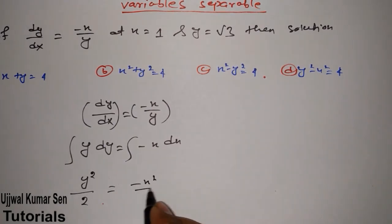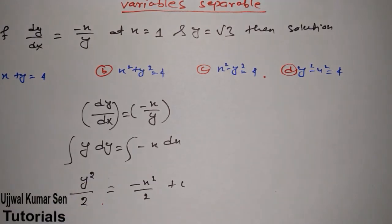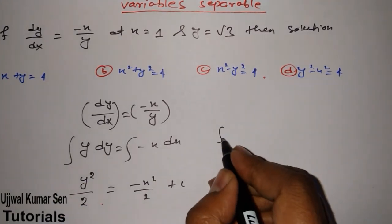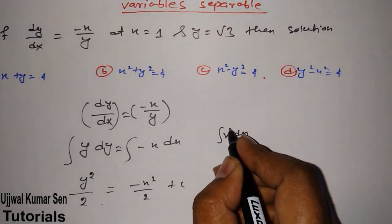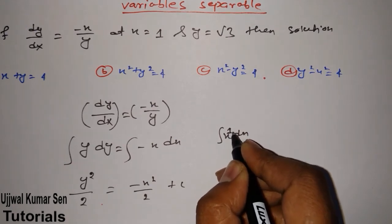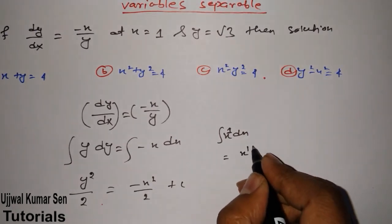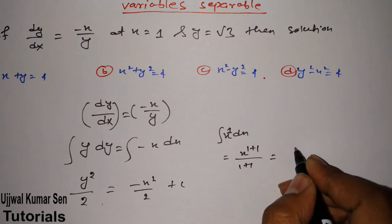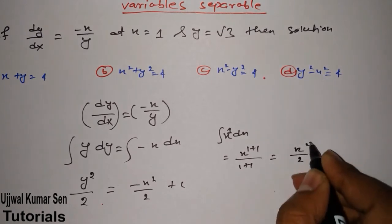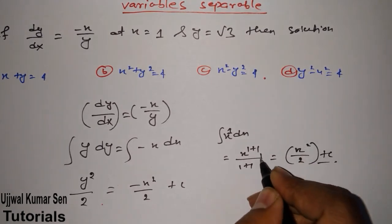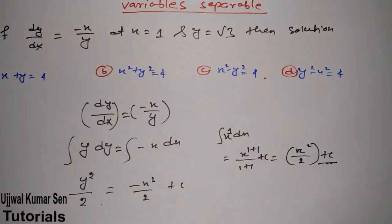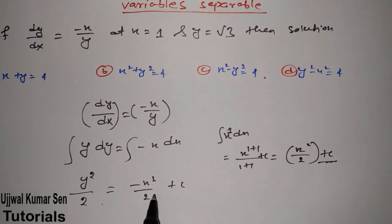Now integrate both sides. After integration we get y²/2 = -x²/2 + c. The arbitrary constant c appears because this is indefinite integration. Just recall that integrating x gives x² / 2 + c by the power rule: power 1, so 1+1=2, divide by 2.